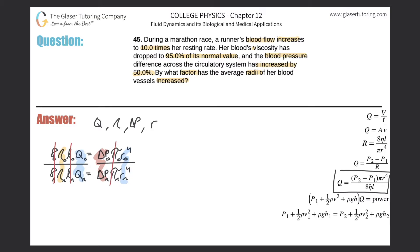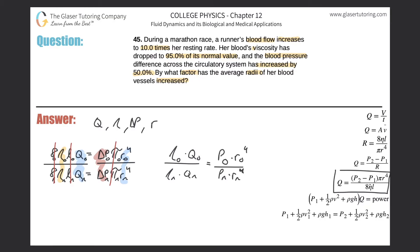Everything else cancels — goodbye to the eights, goodbye to the L's, and goodbye to the pis. Now I have a proportion that states: old viscosity times old flow rate divided by new viscosity times new flow rate equals old pressure times old radius to the fourth divided by new pressure times new radius to the fourth.